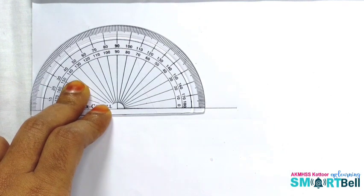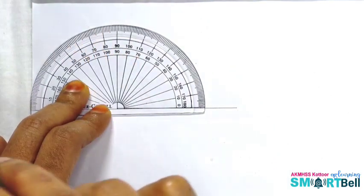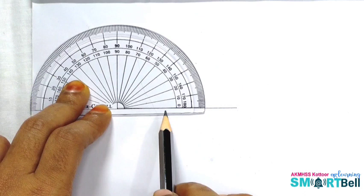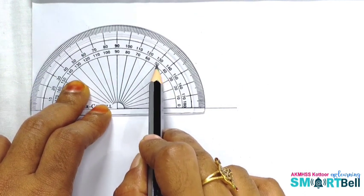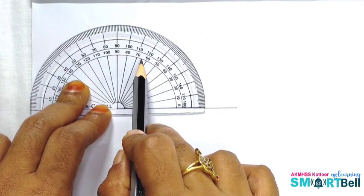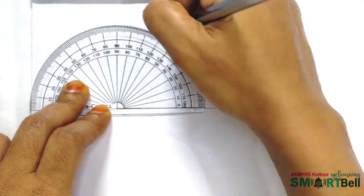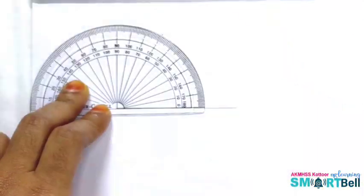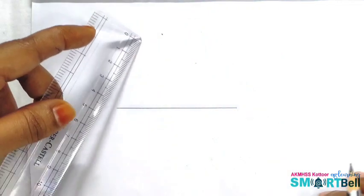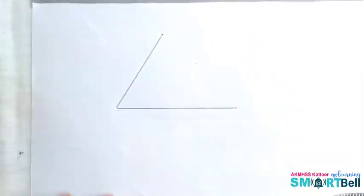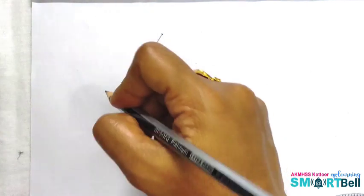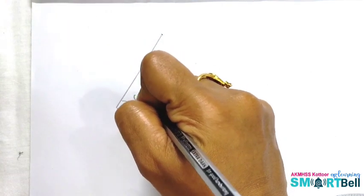Can you see the number 60? Yes, it is. So, 0, 10, 20, 30, 40, 50, 60. We will make a point here. Remove the protractor. Join the endpoint and mark the point. Now see, we made a 60 degree angle.